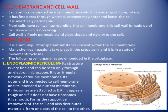The following cell organelles are embedded in the cytoplasm. The first one is the endoplasmic reticulum (ER) — a structure so fine it can only be seen through an electron microscope, not a compound microscope.